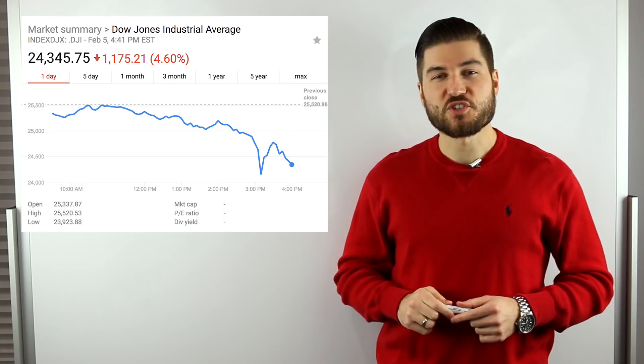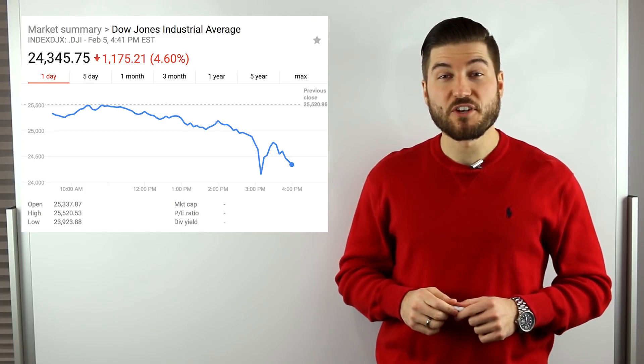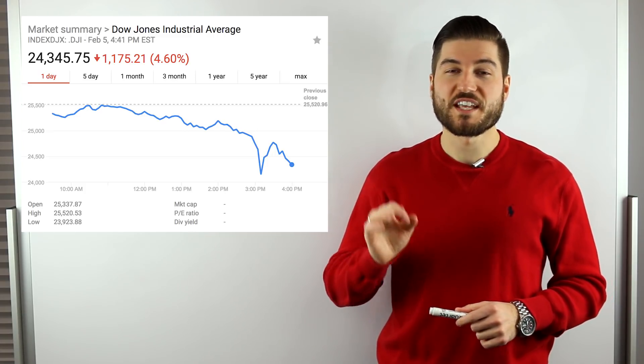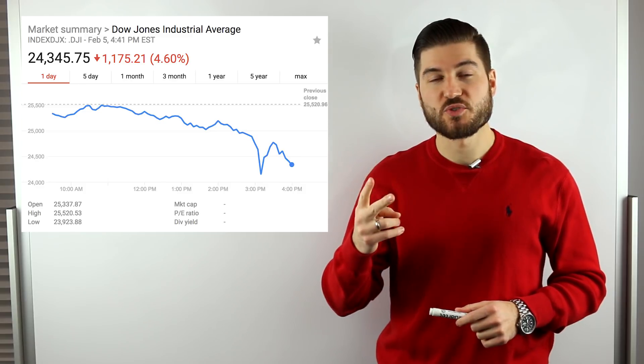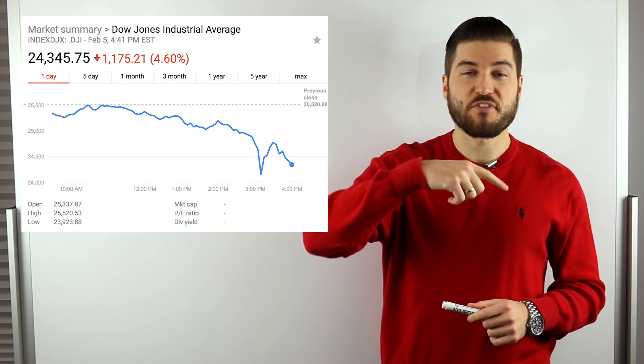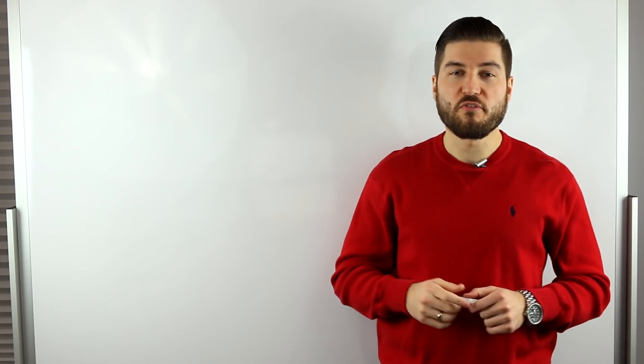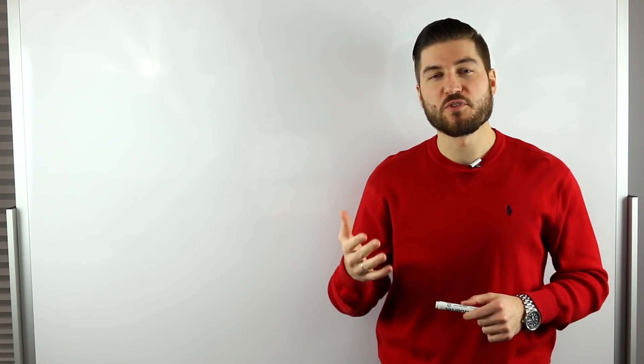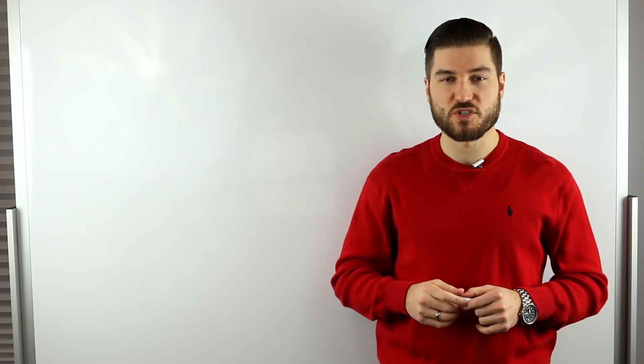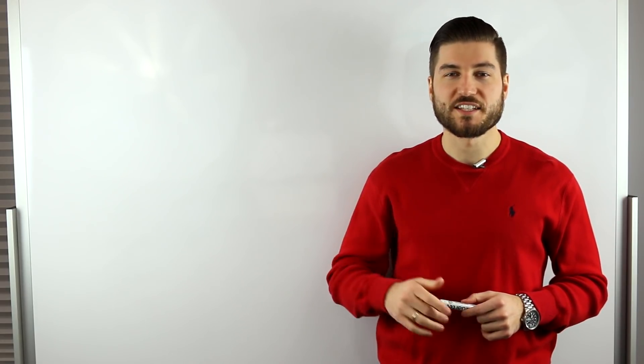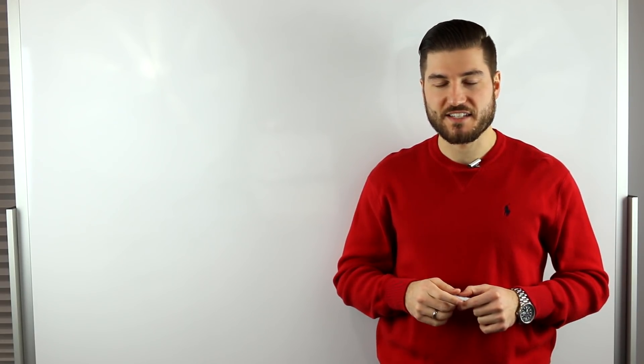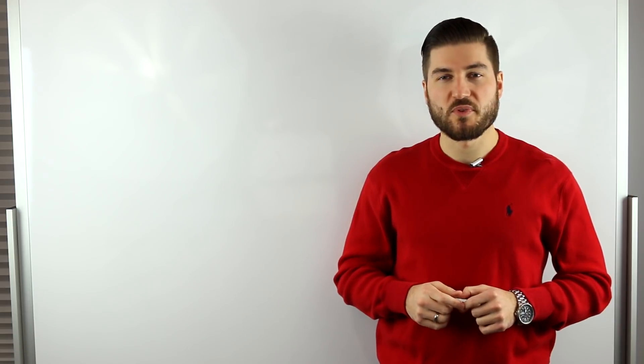The Dow Jones Industrial Average dropped by more than 1,100 points today and over 1,700 points over the past two trading days, last Friday and today being the 5th of February. Although all the fundamentals look solid, there have been a few reasons why I think stocks have plunged so much and so drastically over the past two trading days. So let's talk about a couple of these factors that I think are leading towards this.